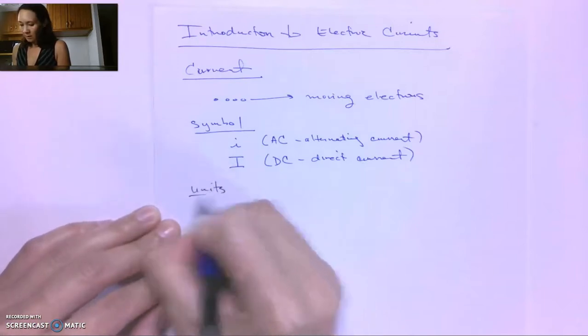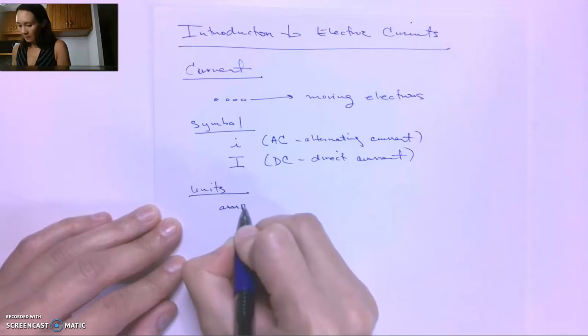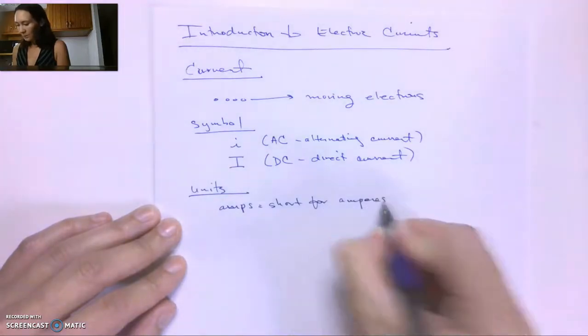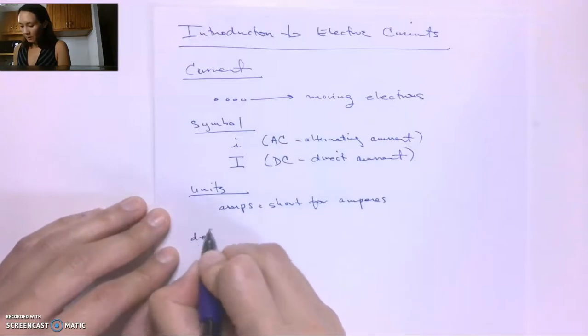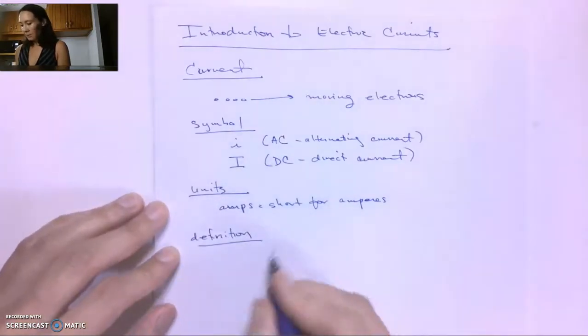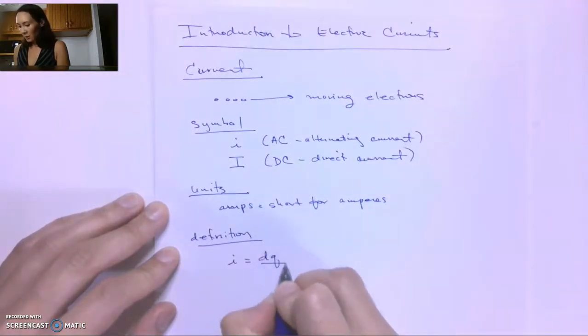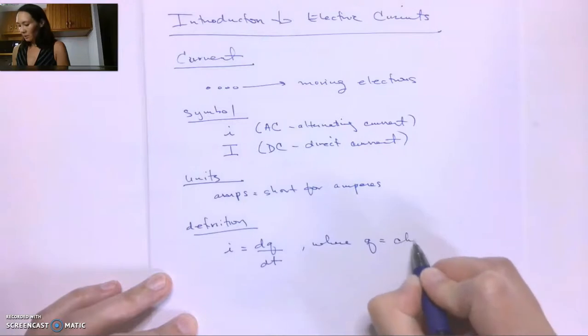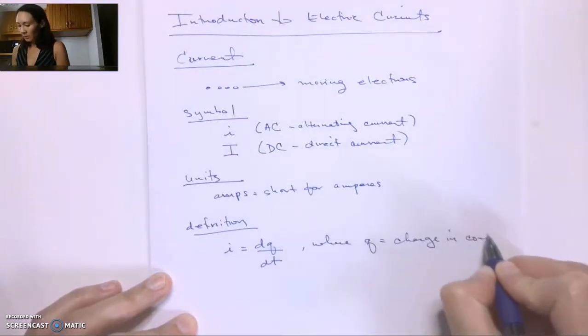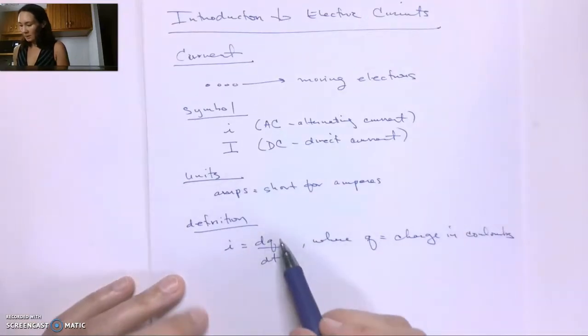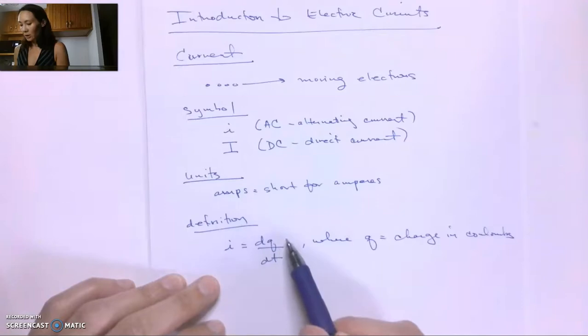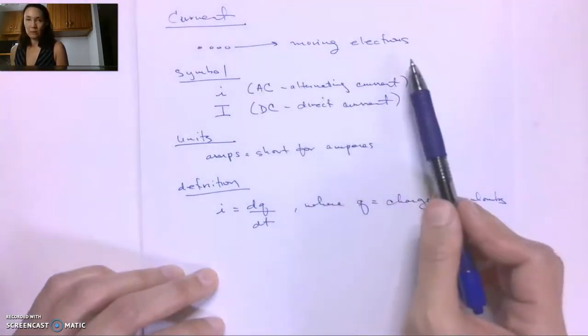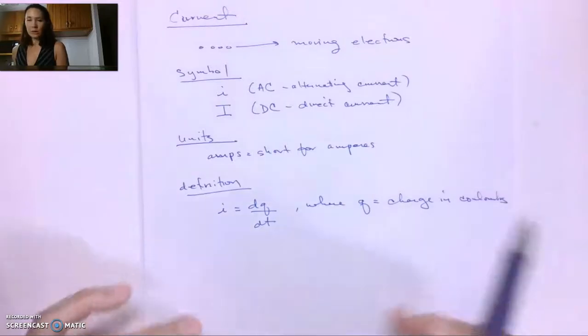The units of current are the amps, and that's short for amperes. And the mathematical definition of current, current is defined as dq/dt, where q is charge in coulombs. So if we have q on top, this means that we have a change in charge per unit time. And so it's basically like describing this movement, right? And so we have to have moving charges in order to have a current.